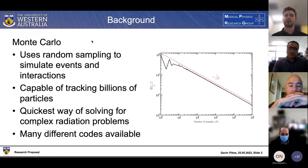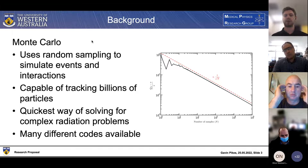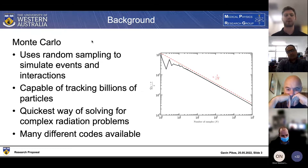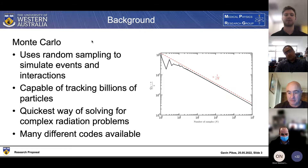Monte Carlo simulations are also the quickest way of solving complex radiation problems - quicker than all other methods - however they are still very computationally intensive. The relative error in Monte Carlo simulations is proportional to one over the square root of N, N being the number of particles being run. If we want to reduce the relative error by a factor of 10, we need to run 100 times more particles. Within the last couple decades, computing power has increased enough where this has become quite a relevant method for radiation shielding calculations.